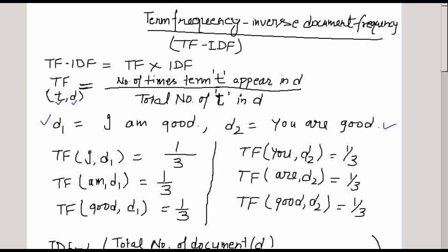To calculate term frequency, put I in place of T and D1 as the document 'I am good'. The term frequency of I in D1 equals the number of times term I appears in the document, which is one time.